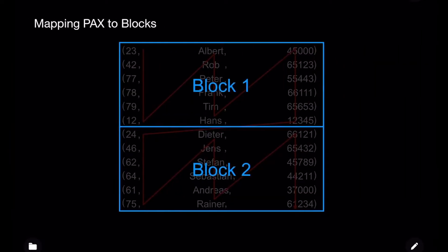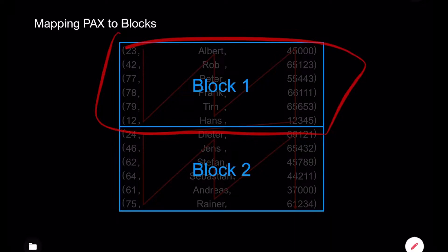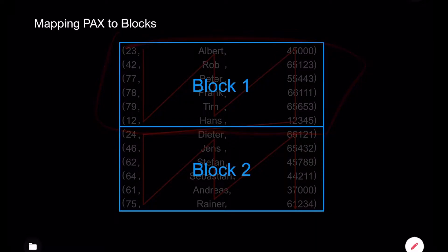Those are horizontal partitions called blocks, also in the context of systems like Hadoop, Spark, and other big data platforms. Those blocks are typically way larger than the blocks we use in this lecture — a page is four kilobytes, maybe eight kilobytes, and the data belonging to the page sitting on persistent storage is called a block. In the context of those systems, blocks can be like 64 megabytes, but it's the same concept: within the block, you do a column layout.